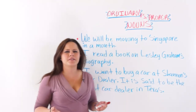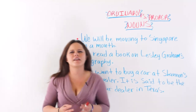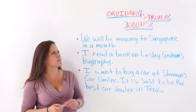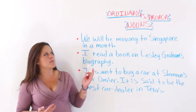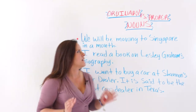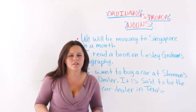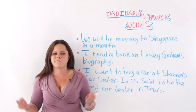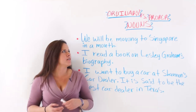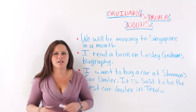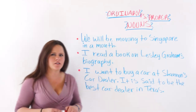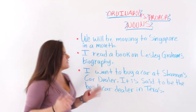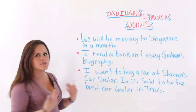Hello students and welcome to this video. In today's class I will be talking to you about ordinary or common versus proper nouns. As we already know, an ordinary noun names general people, places, or things, and proper nouns name specific or particular people, places, and things. Let's get started with the examples so that you can get this clearer.